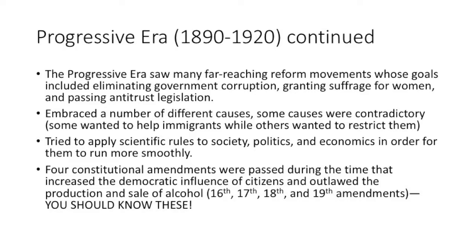Progressives tackled government corruption, beginning at the city and municipal level. Women got the right to vote in 1920 with the 19th Amendment. There was a lot of antitrust legislation like the Sherman Act and the Clayton Antitrust Act. Four amendments were passed during this era: the 16th (income tax), 17th (direct election of senators), 18th (prohibition of alcohol), and 19th (women's right to vote).